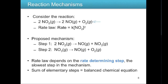A useful analogy: for me, the rate determining step is my drive to Eastern Michigan University because it takes about an hour — longer than getting up and getting ready. The overall time depends on how slow that drive is. Similarly, the rate law depends on the slowest step in the mechanism. Rate laws can generally only be determined experimentally, but the exception is that they can be derived directly from the stoichiometry of the rate determining step.